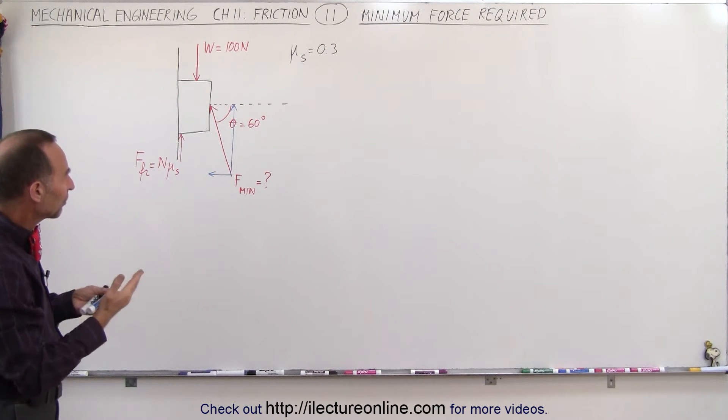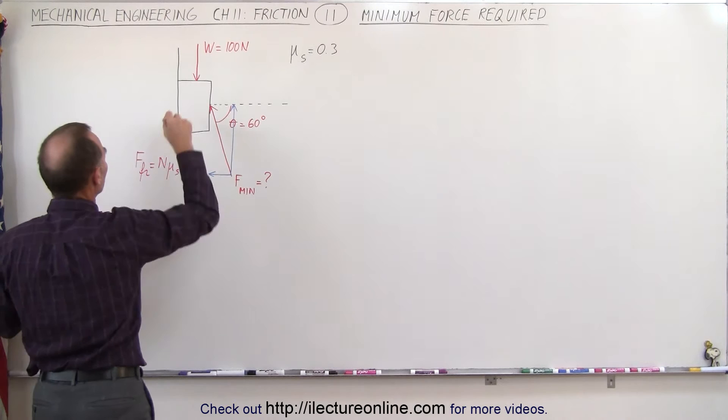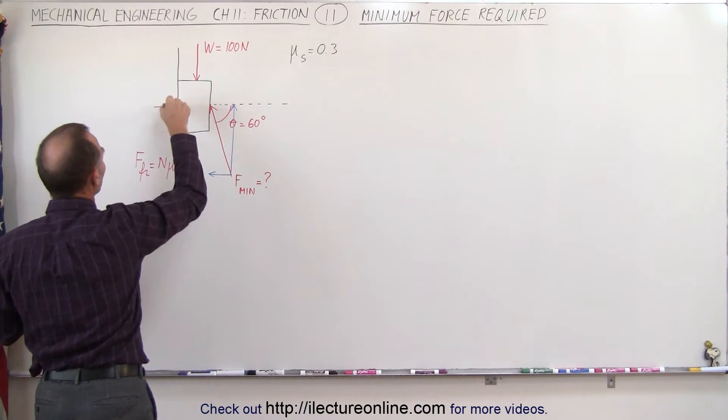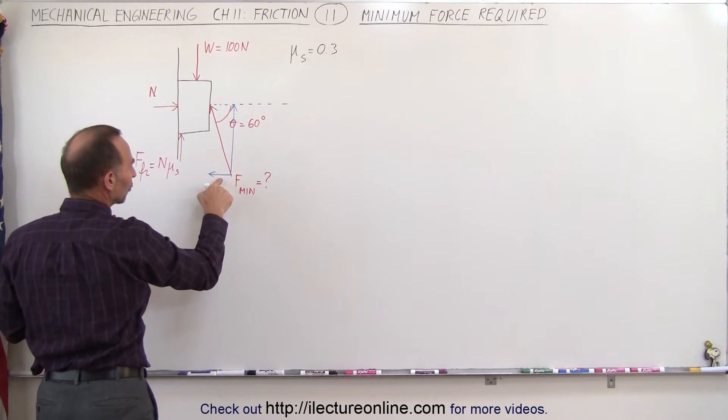So how do we find that minimum force required? Well, what we need to do first is determine the normal force. We're going to have a normal force pushing back, and this normal force will have to be equal to the horizontal component.